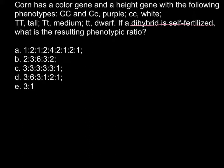So what we have to do is cross capital C, small c, capital T, small t — written as CcTt — with the same genotype: capital C, small c, capital T, small t. This is going to be the dihybrid self-fertilization.